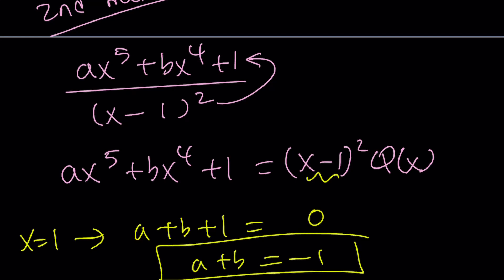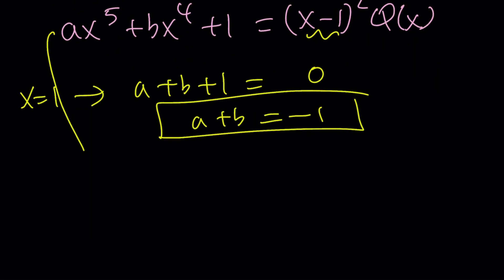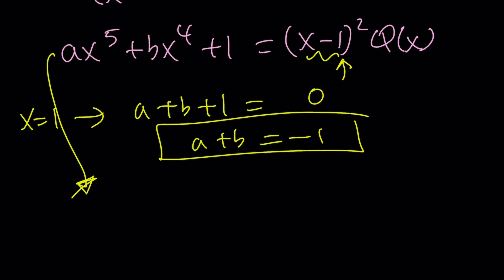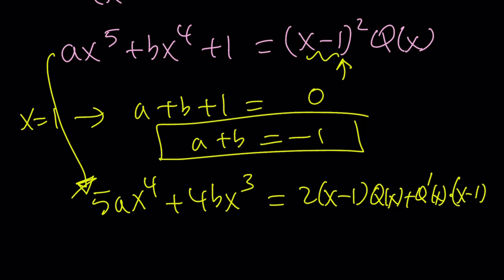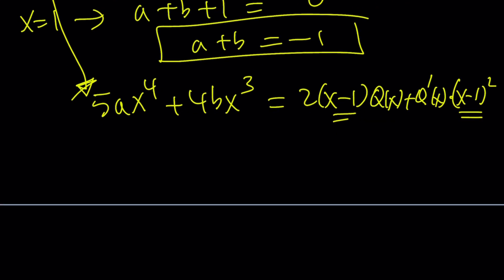Awesome. But I do need another equation, and derivative comes to the rescue. Because this is a perfect square, there's a theorem that says if you are dividing a polynomial by something squared, you can use the derivatives. Differentiate both sides, and you're going to get the following. This is going to be the product rule, the derivative of the first times the second, plus the derivative of q, we don't care about that either, times the first. But what we care about is, we still get x minus 1 as a factor, which is really cool because we can replace x equals 1 again. This time we get 5a plus 4b equals 0.